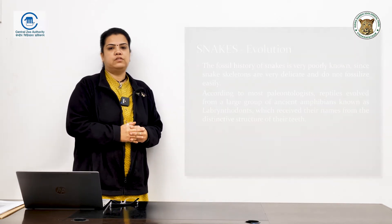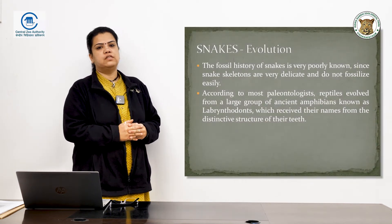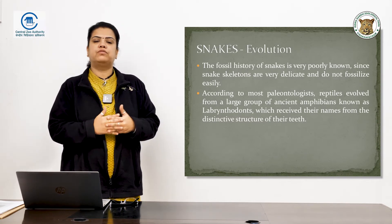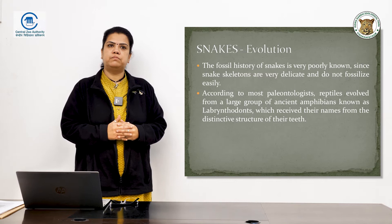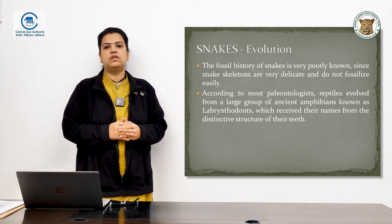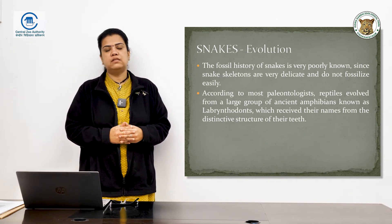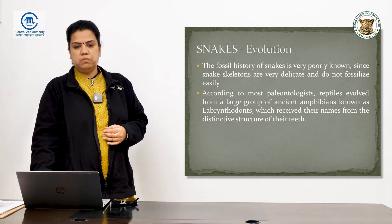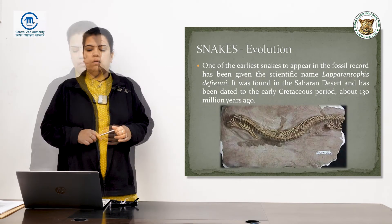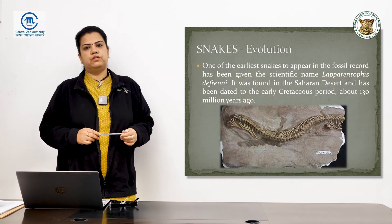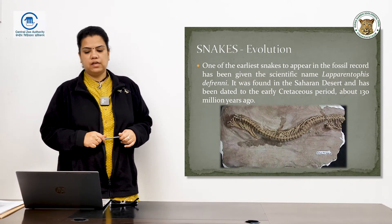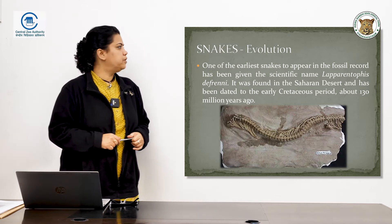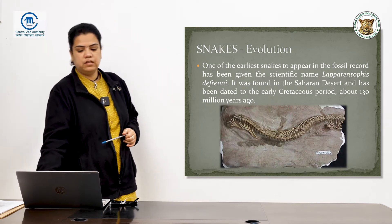There is very little fossil history available about snakes simply because of the way their bones are structured. They have a very delicate skeleton, and therefore fossil history about them was minimally available. One of the earliest snakes to appear in the fossil record was found in the Saharan desert in the early Cretaceous period, about 130 million years ago.